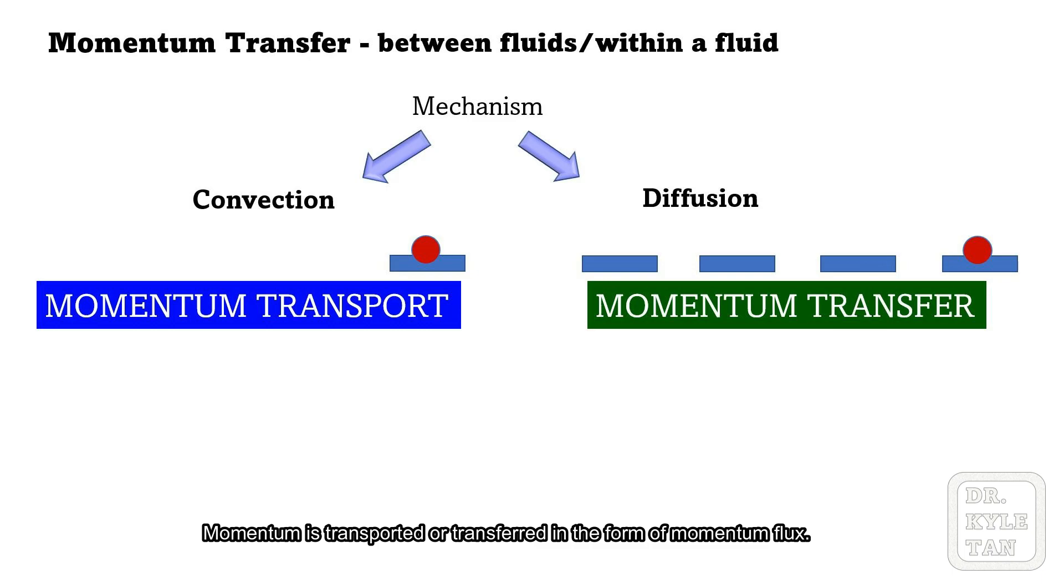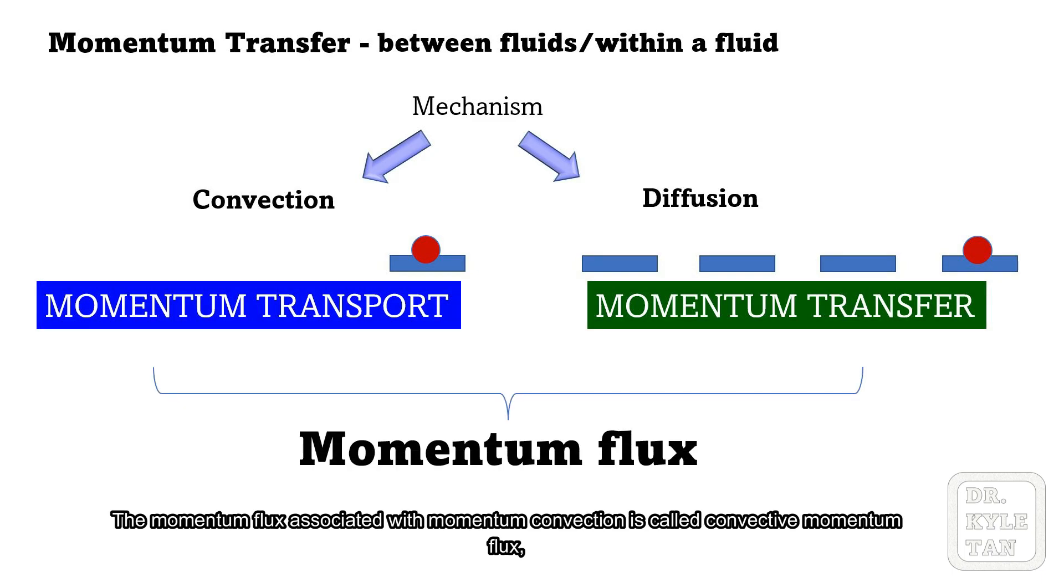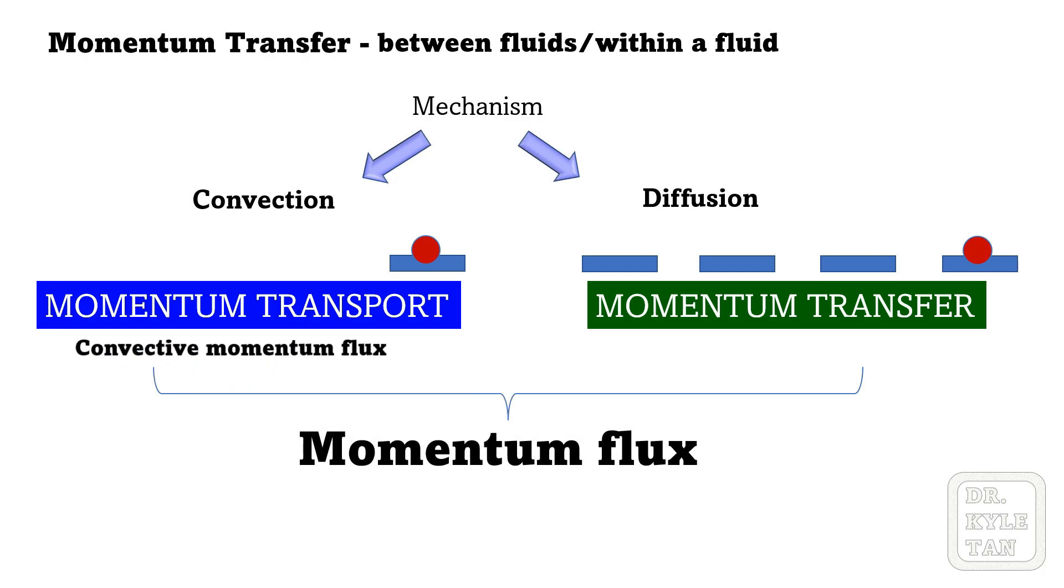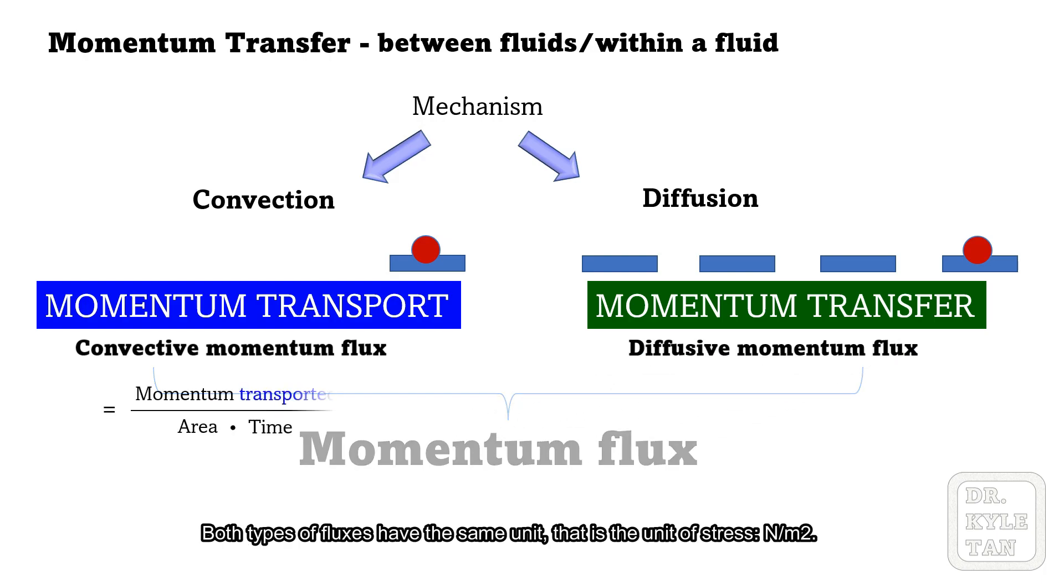Momentum is transported or transferred in the form of momentum flux. The momentum flux associated with momentum convection is called convective momentum flux, while that associated with momentum diffusion is called diffusive momentum flux. Both types of fluxes have the same unit, that is the unit of stress.